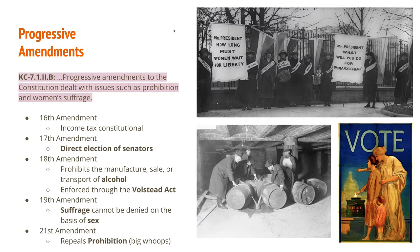Several constitutional amendments came out of this historical period. The 16th Amendment created a constitutional income tax. The 17th Amendment allowed for the direct election of senators, diminishing the power of wealthy influences and political machines. The 18th Amendment was a success for the temperance movement, prohibiting the manufacture, sale, or transport of alcohol, enforced through the Volstead Act. The 19th Amendment gave women the right to vote, stating suffrage could not be denied on the basis of sex. The 21st Amendment later repealed prohibition because it had led to a rise in criminal activity, and Congress saw it as a failed experiment.